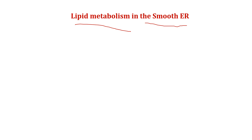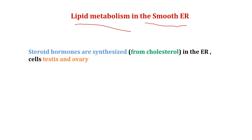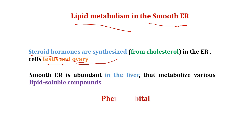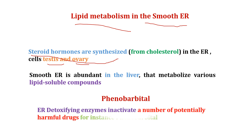The smooth ER is abundant in cell types that are particularly active in lipid metabolism. For example, steroid hormones are synthesized from cholesterol in the ER, so large amounts of smooth ER are found in steroid-producing cells such as the testes and ovaries. The smooth ER is also abundant in the liver, where it metabolizes various lipid-soluble compounds. The ER also contains detoxifying enzymes that inactivate a number of potentially harmful drugs — one example being phenobarbital, which inhibits these detoxifying enzymes.